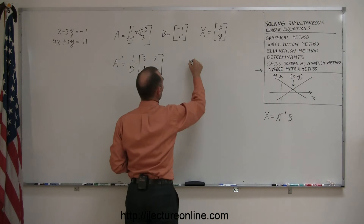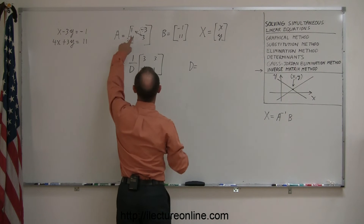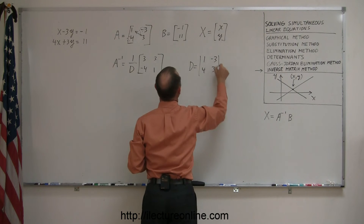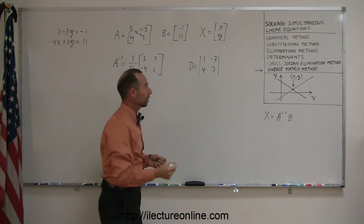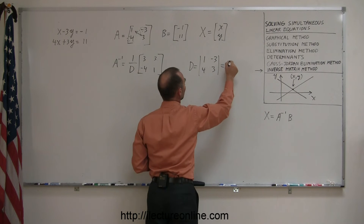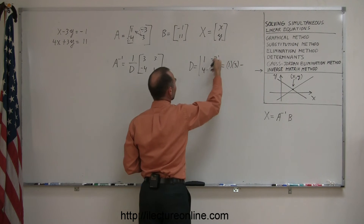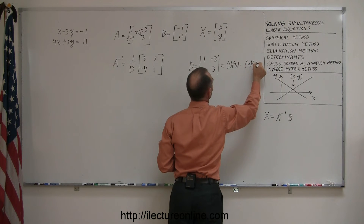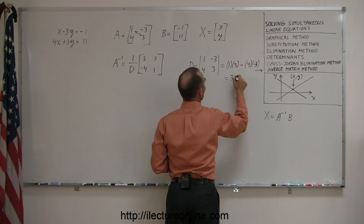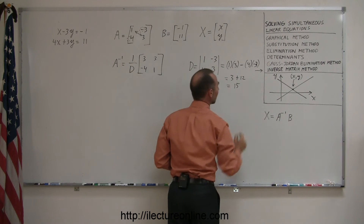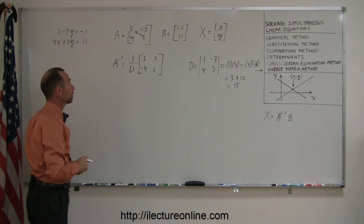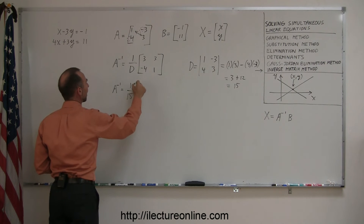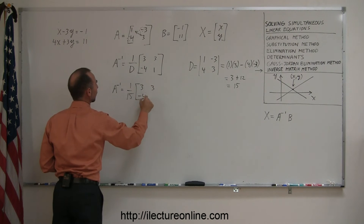Remember, the determinant of any matrix — here 1, negative 3, 4, and 3 — can be found by multiplying the diagonal elements together, which is 1 and 3, and subtracting from that the product of the other two elements, which is 4 and negative 3. So this is equal to 3 plus 12, or 15. The determinant of that matrix is 15. That means the inverse of the matrix is equal to 1 over 15 times the matrix with elements 3, 3, negative 4, and 1.